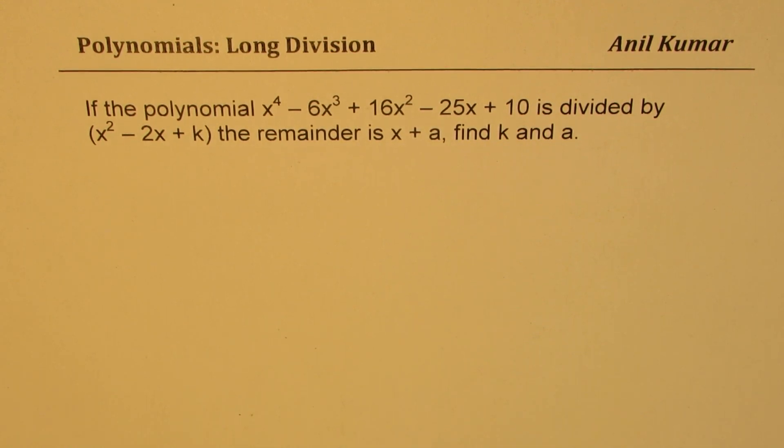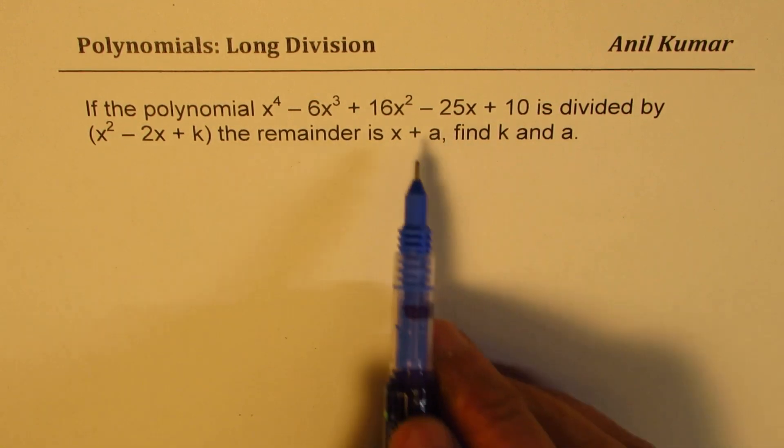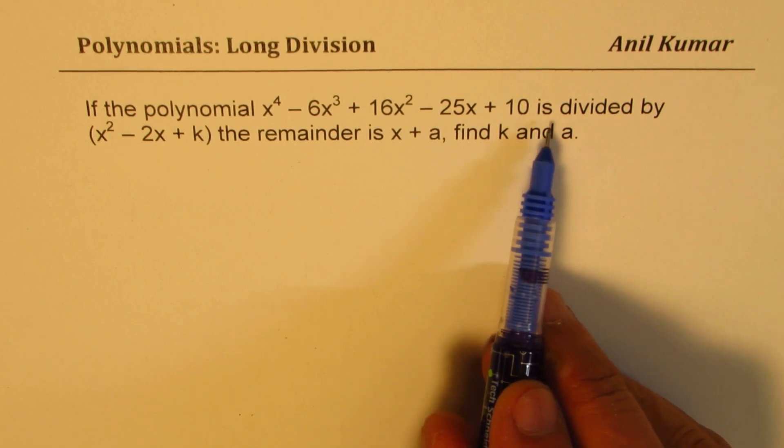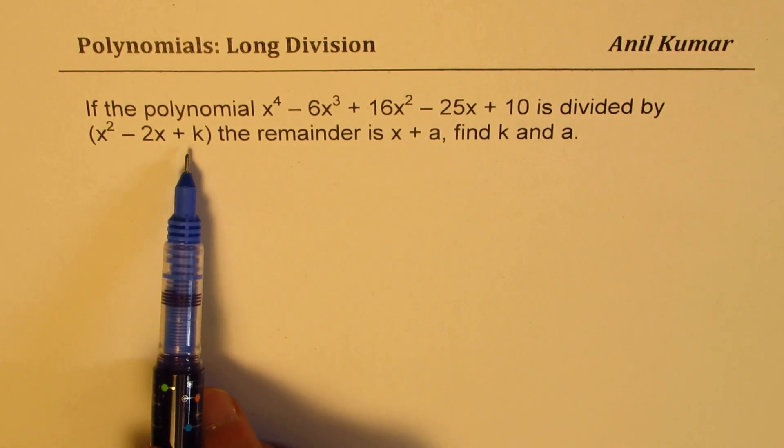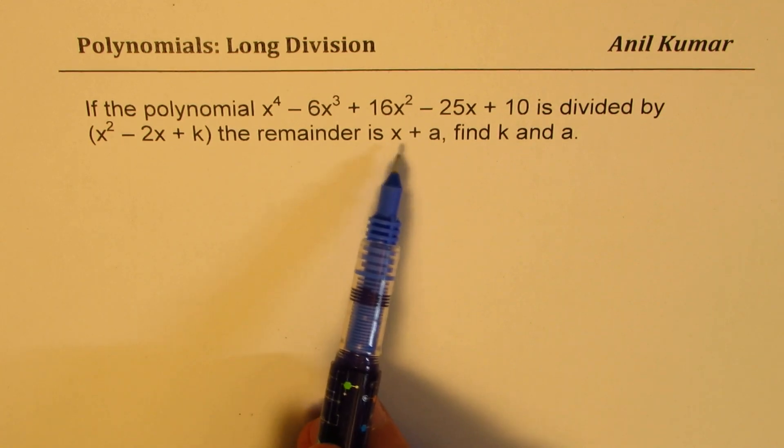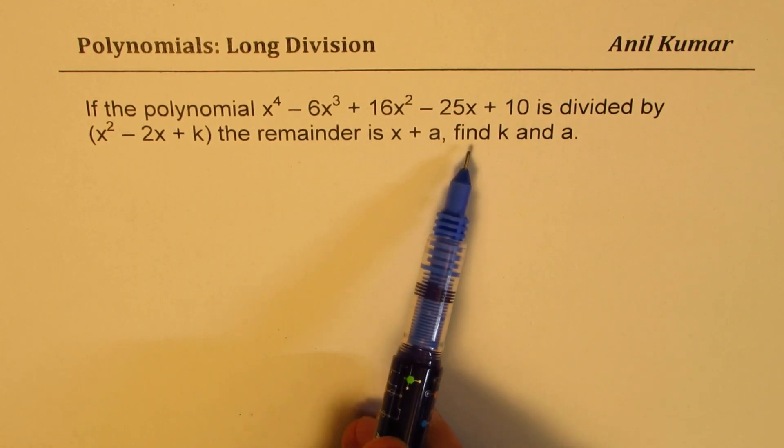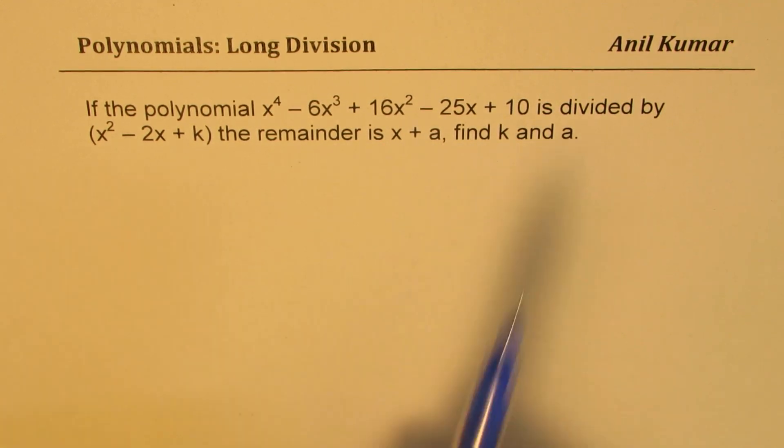Let's begin with this one. If the polynomial x^4 - 6x^3 + 16x^2 - 25x + 10 is divided by x^2 - 2x + k, the remainder is x + a. Find k and a. I would like you to pause the video, answer the question, and then look into my suggestions.